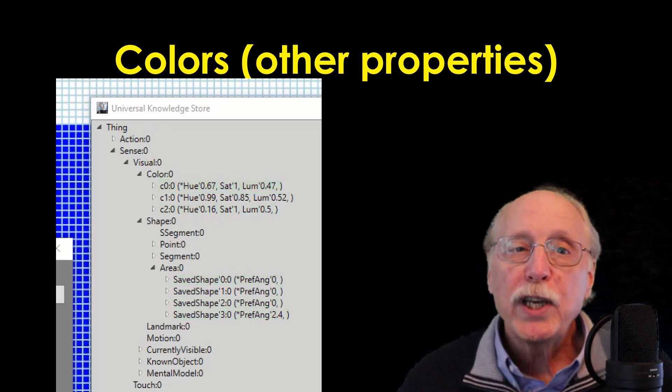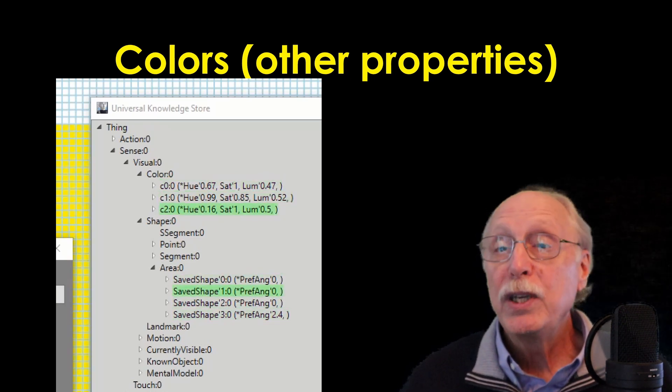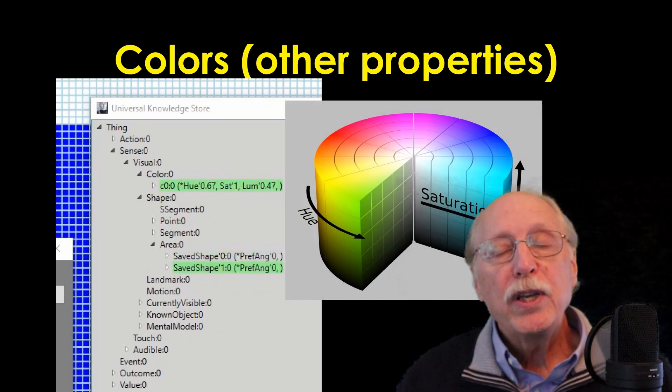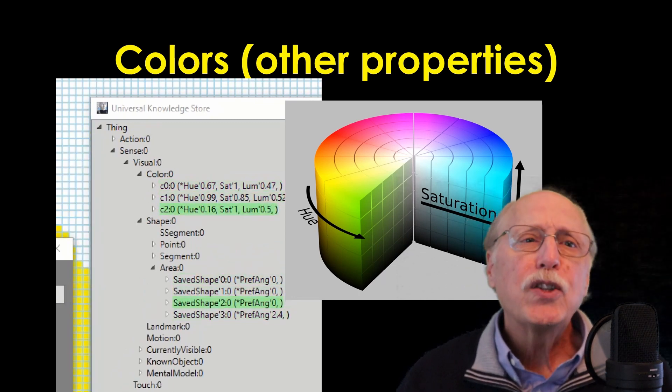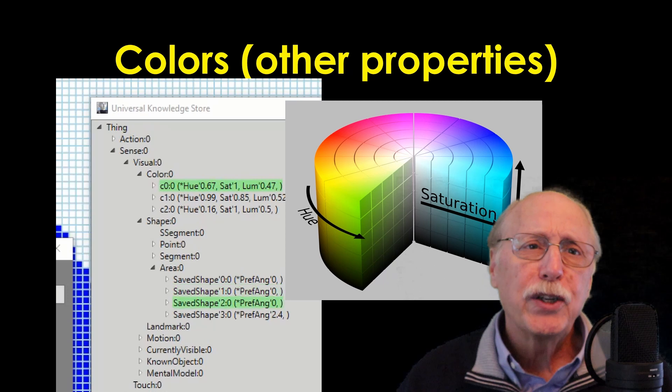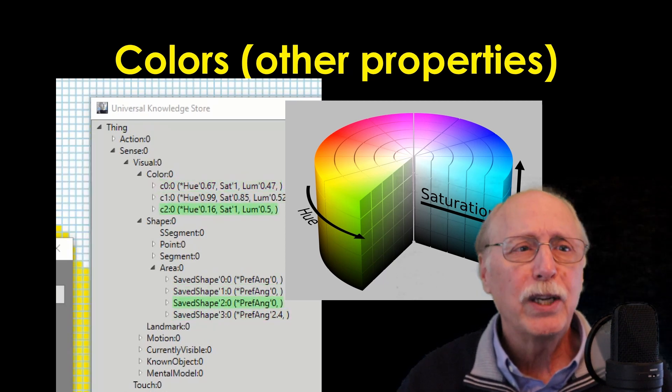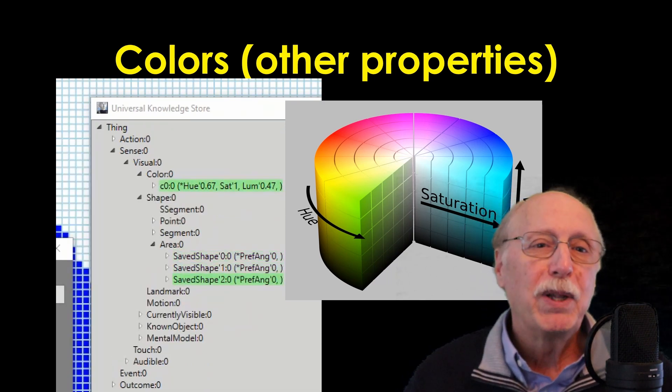When we get to association, we'll see that incoming words can be associated with these color nodes. Colors are stored in the UKS in terms of their hue, saturation, and luminance. This is more convenient for color recognition because, for example, all reddish colors have a similar hue, while comparisons in the more common RGB format are a little more complex.